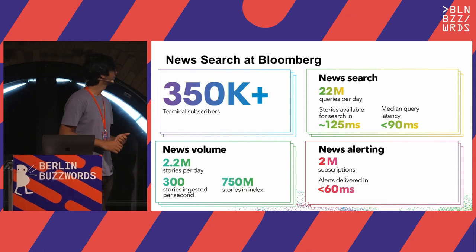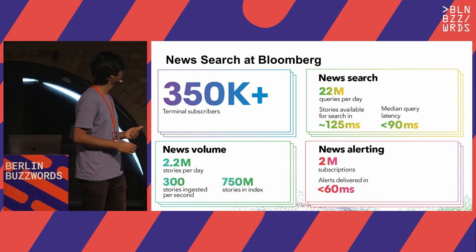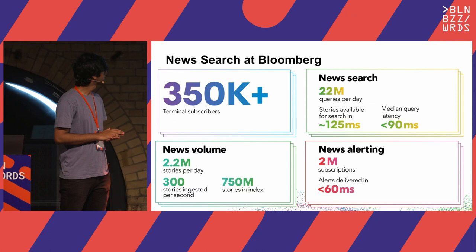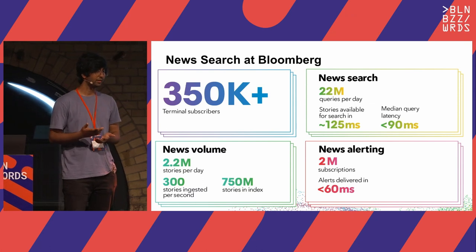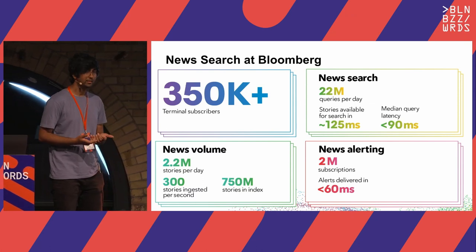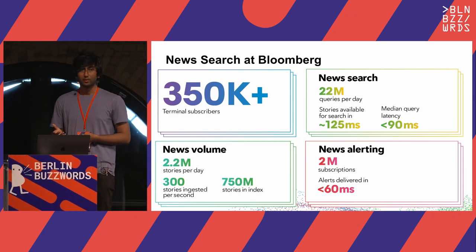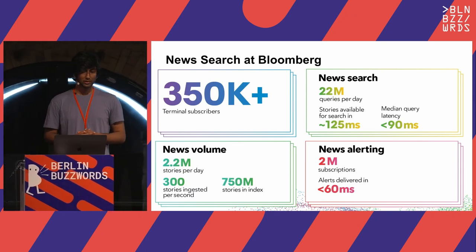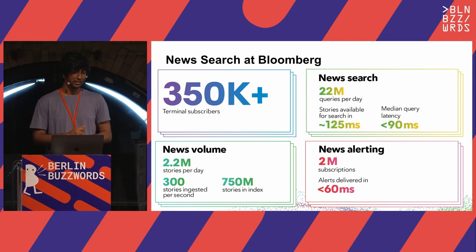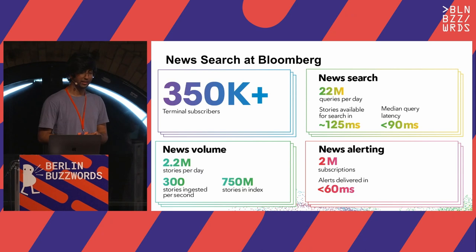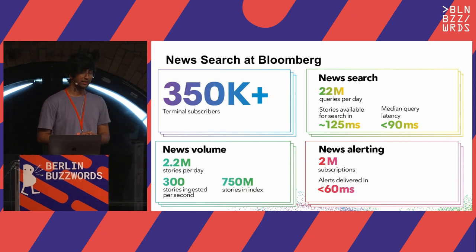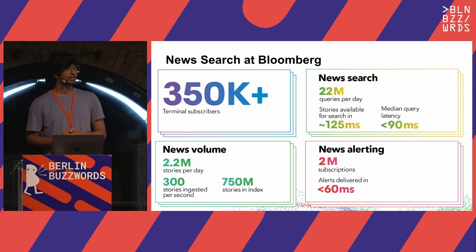Just to give you a brief idea of the scale of the data: we at News Search serve around 22 million queries every day. The median latency for those queries is around 90 milliseconds. We get around 2.2 million new news stories every day, which at peak times is 300 stories per second. We have around 750 million stories in our index, replicated across multiple machines to 126 terabytes.